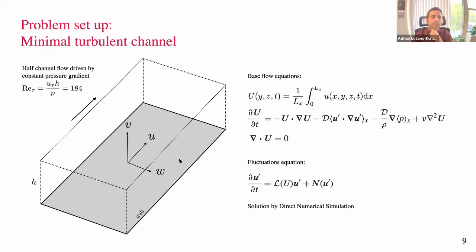I write the Navier-Stokes equations and perform the decomposition into base flow and fluctuations. The base flow is the average in the streamwise direction of the instantaneous velocity — using nomenclature u, v, and w, capital U is computed by integrating over the streamwise domain length L_x. The equation for fluctuations is written in compact form. These equations are solved by direct numerical simulation with the spatial and temporal resolution needed to fully resolve the equations.